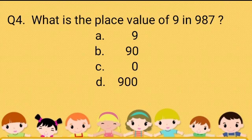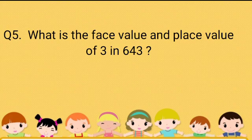Question 4: What is the place value of 9 in 987? Option A: 9. Option B: 90. Option C: 0. Option D: 900. The answer is 900. Question 5: What is the face value and place value of 3 in 643? The answer is face value 3, and place value 3.